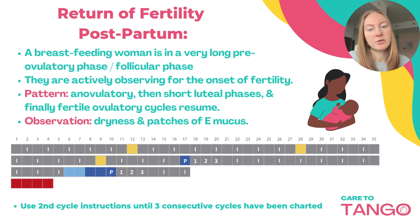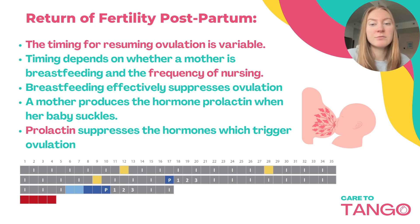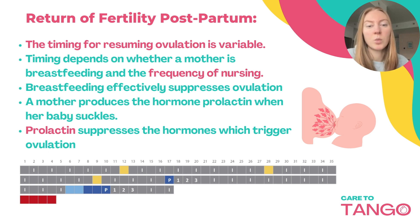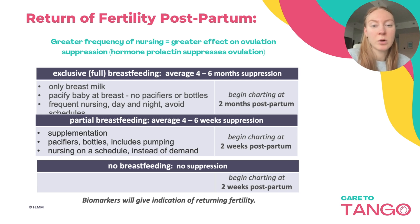Seeing a short luteal phase after that first ovulation can be very common, and the timing for resuming ovulation is variable per person. This timing depends on whether a mother is breastfeeding and the frequency of nursing. Breastfeeding effectively suppresses ovulation due to the production of prolactin when her baby suckles. Prolactin suppresses the hormone which triggers ovulation, and the greater the frequency of nursing, the greater the effect of ovulation suppression.